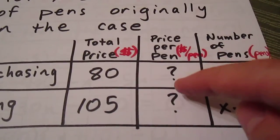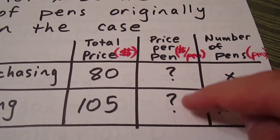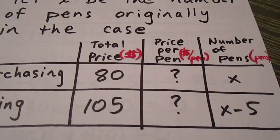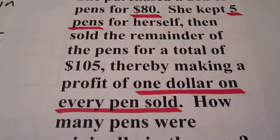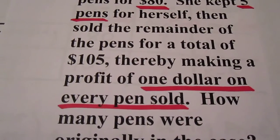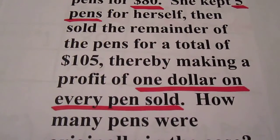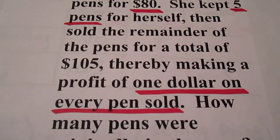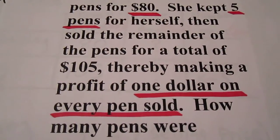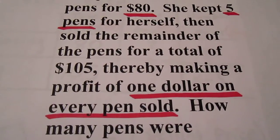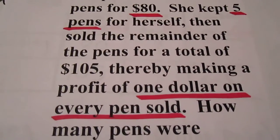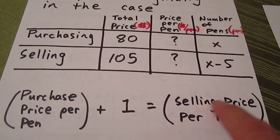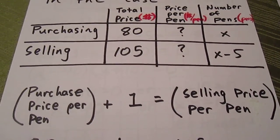We don't know what the price per pen was with the purchasing or the selling, but we are going to have to come up with an equation involving these two variables. Since it tells us that she made a profit of one dollar on every pen sold, that tells us that the price she sold the pens for is greater by one than the price she paid for the pens. In other words, if you took the price that she bought the pens for and added one, you would get the price that she sold the pens for. That's why people go into business.